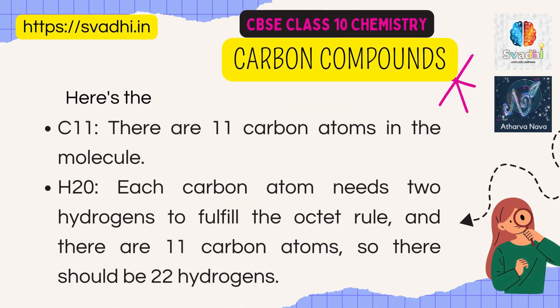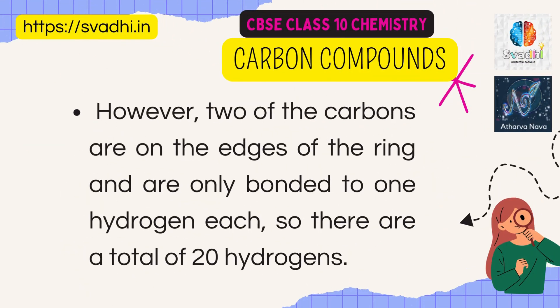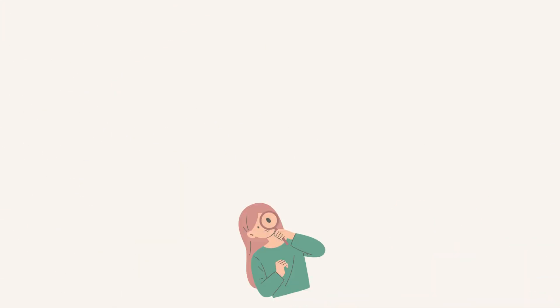Here's the breakdown. C11: there are 11 carbon atoms in the molecule. H20: each carbon atom needs two hydrogens to fulfill the octet rule, and there are 11 carbon atoms, so there should be 22 hydrogens. However, two of the carbons are on the edges of the ring and are only bonded to one hydrogen each, so there are a total of 20 hydrogens.